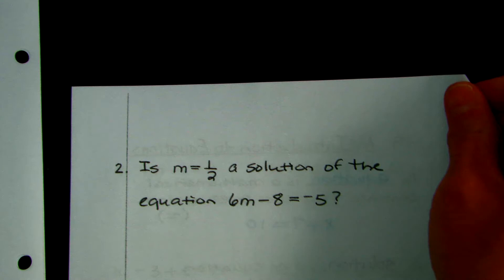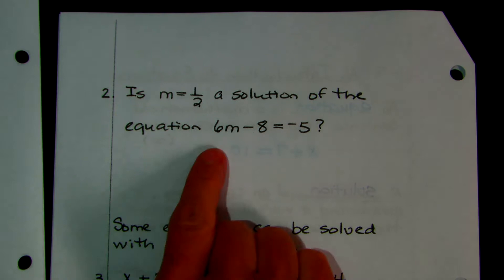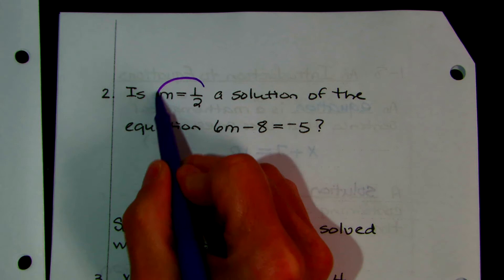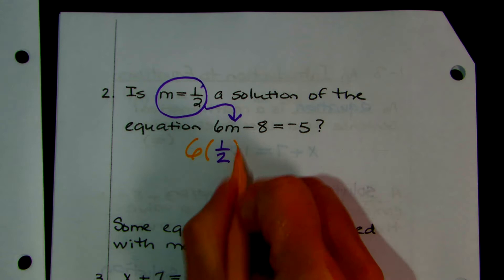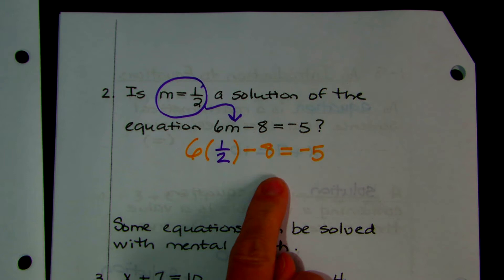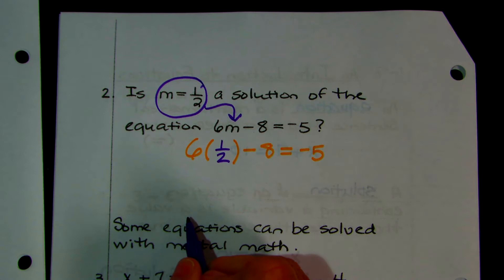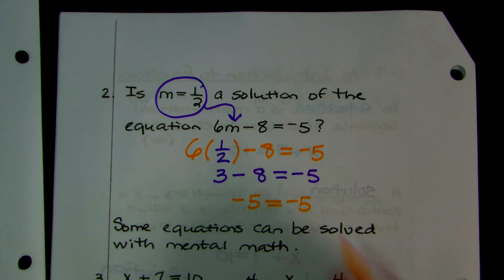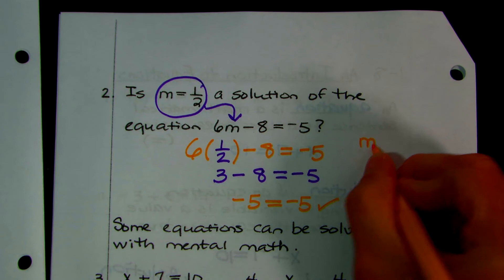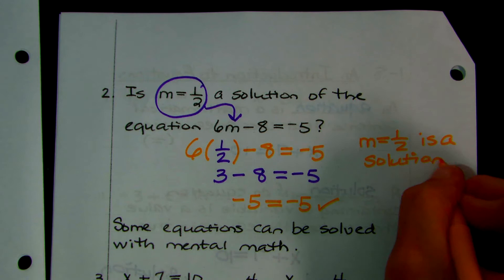Is m equals 1/2 a solution of the equation 6 times m minus 3 equals negative 5? You're going to take what m is equal to and substitute it in place of m. So you have 6 times 1/2 minus 8 equals negative 5. 6 times 1/2 — what is half of 6? That would be 3 minus 8 equals negative 5. And 3 minus 8 is negative 5. Is negative 5 equal to negative 5? Yes, so m equals 1/2 is a solution.